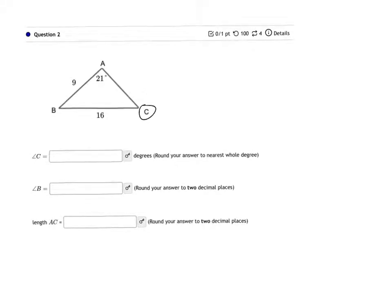I'm going to do that by doing the sine of A, which is 21, over side A, which is 16, is equal to the sine of C over its opposite side, side C, which is 9.